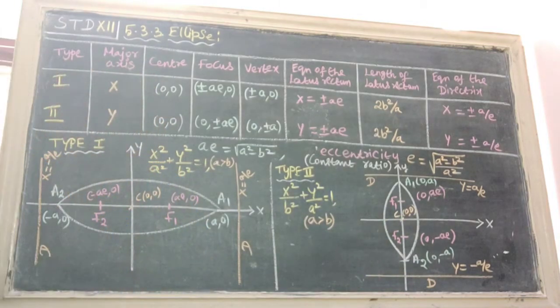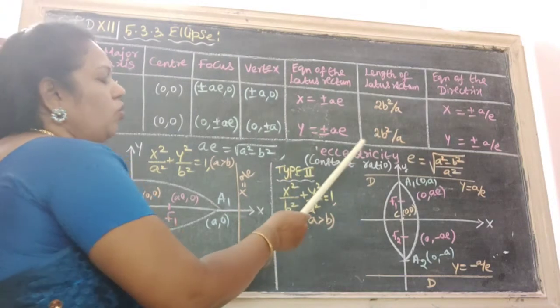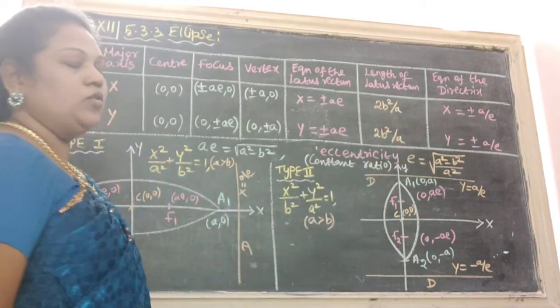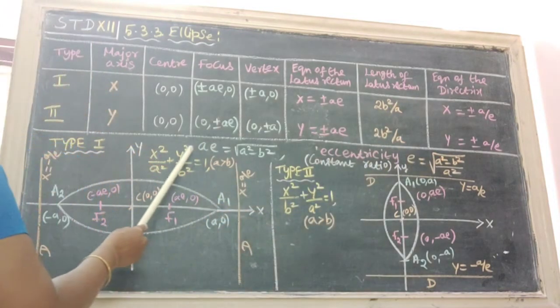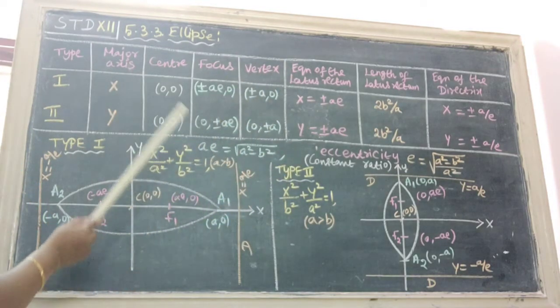The constant ratio is e, the eccentricity. The formula is square root of a square minus b square by a, then the formula ae equal to root of a square minus b square. We see type 1.